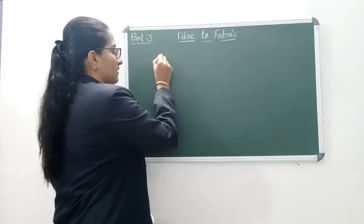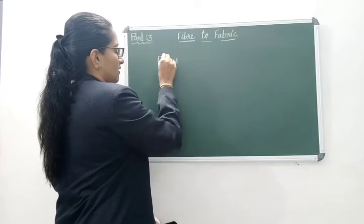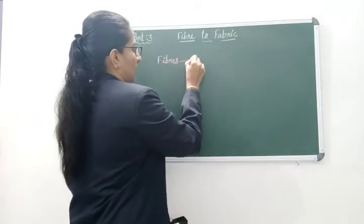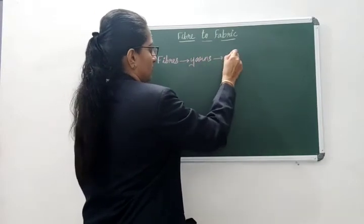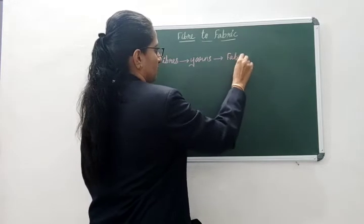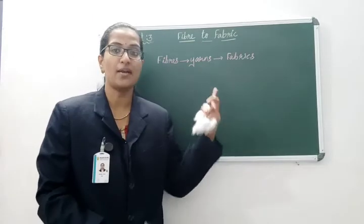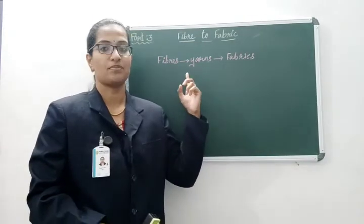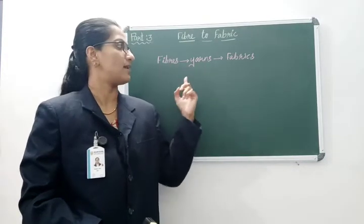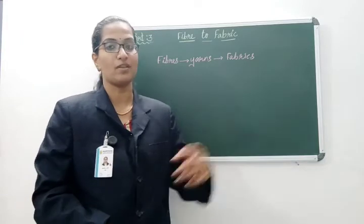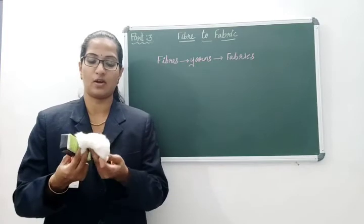We know that the chain is: fibers are converted to yarns, and finally yarns are converted to fabrics. Yarns are made up of fibers, and fibers come from different sources like plants and animals, and the yarns are then converted to fabrics.